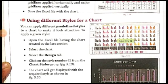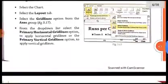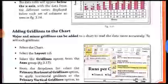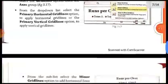Hello everyone, welcome to this new video which is part 6 of chapter number 3. Our chapter heading is Creating Charts in MS Excel, and we have already studied 5 parts of this chapter. In the previous part 5 video, we studied how we can add different types of major and minor grid lines to our chart after creating it.